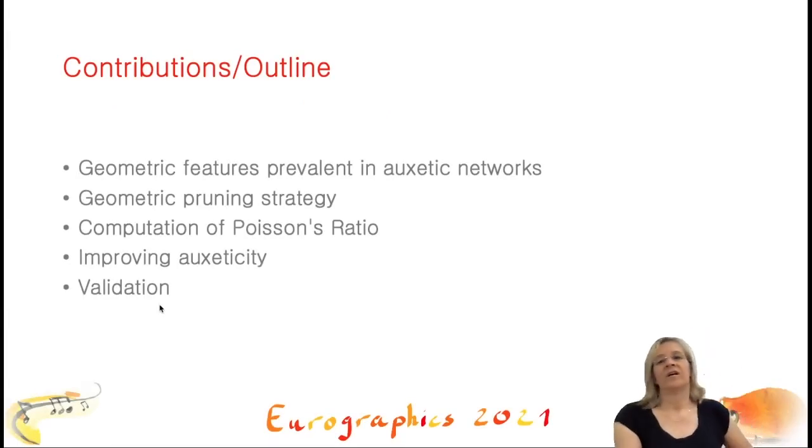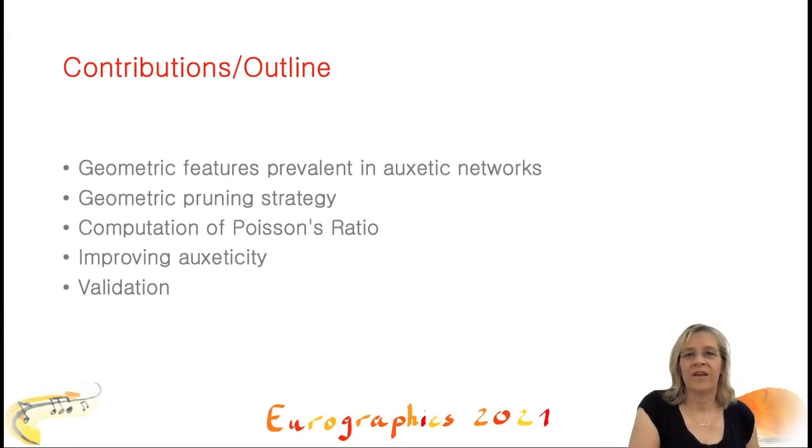This leads us to the following contributions. First, we analyze geometric features shared by auxetic networks. Then, we develop a pruning strategy starting from a dense network and deleting edges selected with the geometric criteria with the goal of reproducing the observed geometric features. At the end, we calculate the Poisson's ratio of the network to assess their auxeticity. We also propose a vertex displacement step and show that it improves the auxeticity. And finally, we analyze and validate our process.